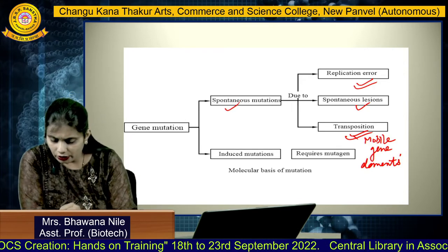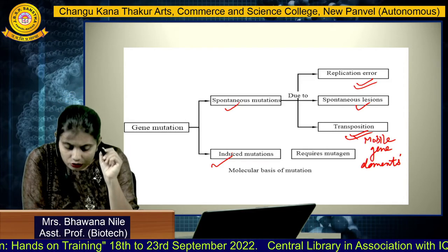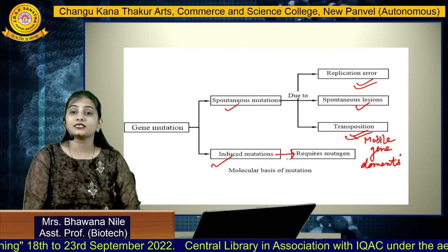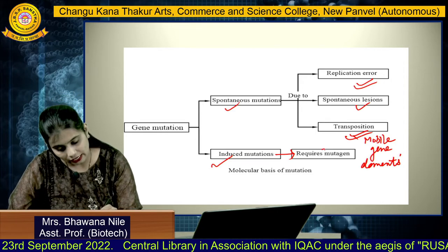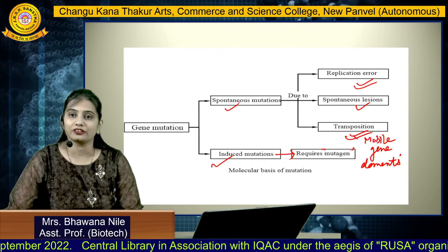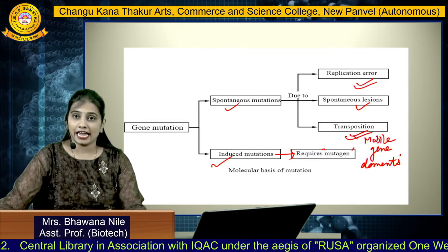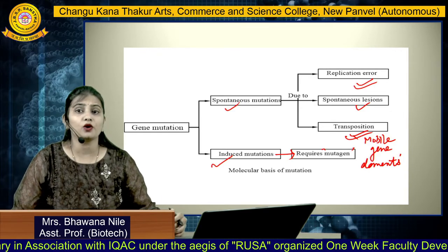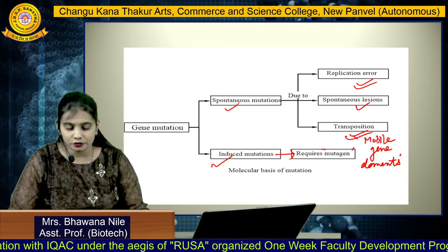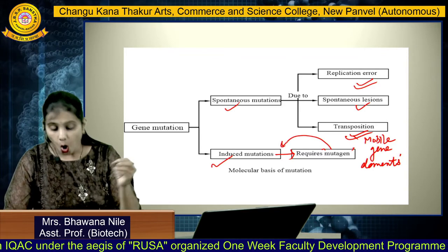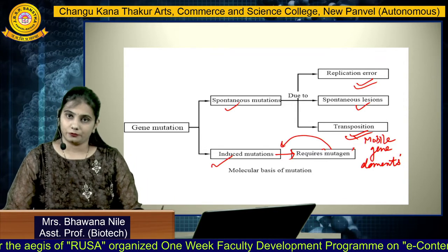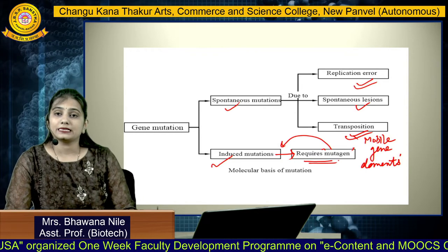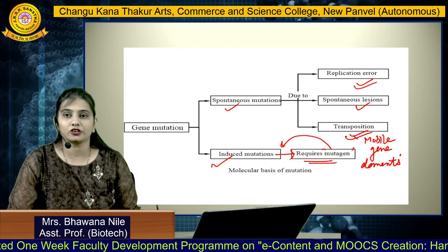Coming to the molecular basis of induced mutations: induced mutation always requires an external factor, which we call a mutagen. A mutagen is any agent — it can be a chemical, physical, or biological agent — that is responsible for causing mutations. This is the molecular basis of induced mutation in the cell.